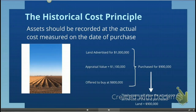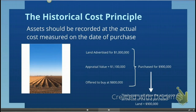Let's say that you are looking at a tract of land. The land was advertised for $1 million. You were interested in purchasing it, so you had the land appraised and the appraisal value came in at $1.1 million. But you don't want to pay $1.1 million or the advertised price of $1 million, so you decide to make an offer at $800,000. After negotiations, you and the seller settled at a price of $900,000 and you purchased this land for $900,000.